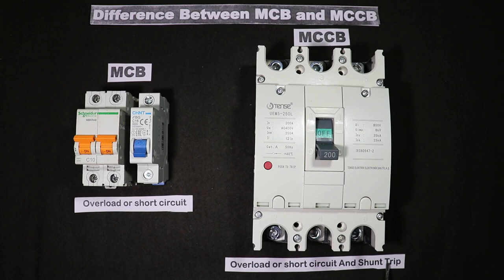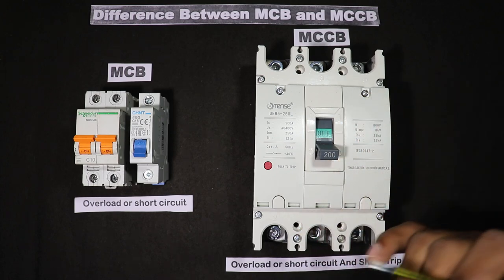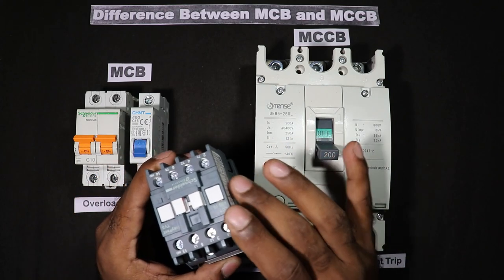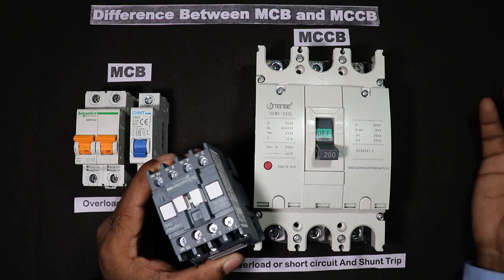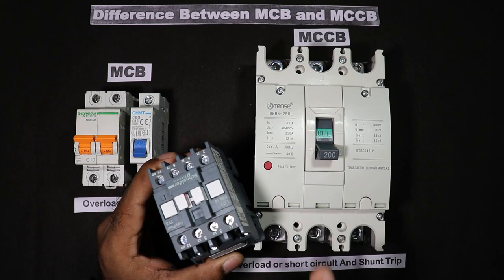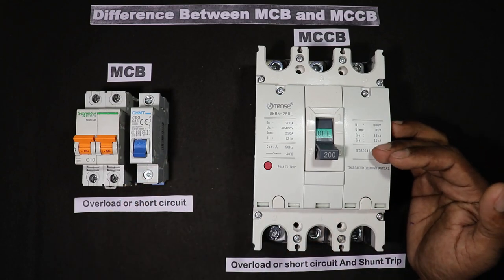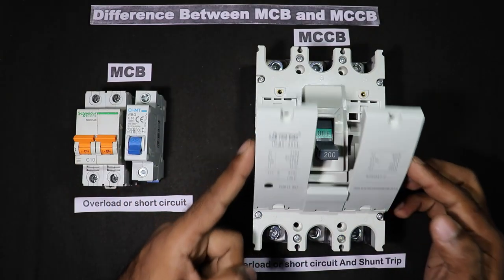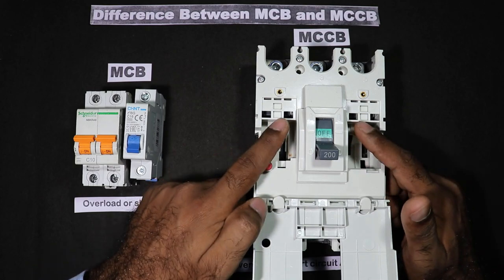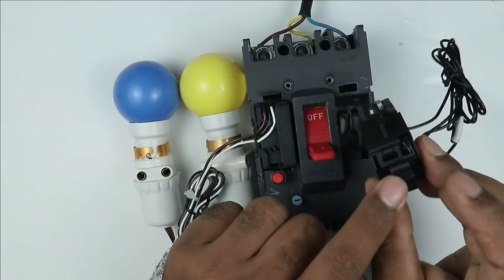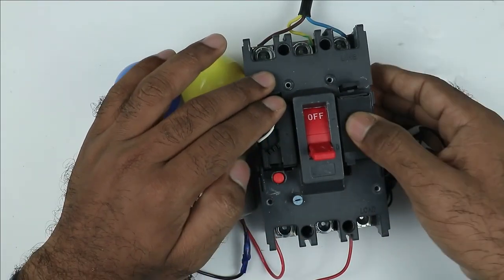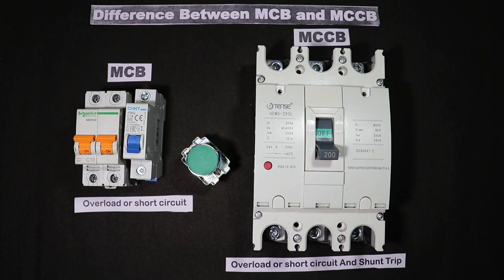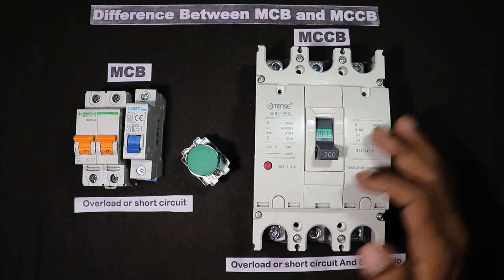Besides, shunt trip is a feature here which means we can make this MCCB trip separately. By simply pressing a push button I can let this breaker trip. As you have seen with contactors, we use interlocking so that if any problem occurs the contactor will turn off by itself. Similarly, in this MCCB a shunt is placed inside — at the back side there is an option to connect the shunt. I am opening the cover so you can see: some space is provided where you mount the shunt coil. Two wires come out which can be connected with a push button or used in any kind of interlocking. When we press the push button, this MCCB will trip instantly.